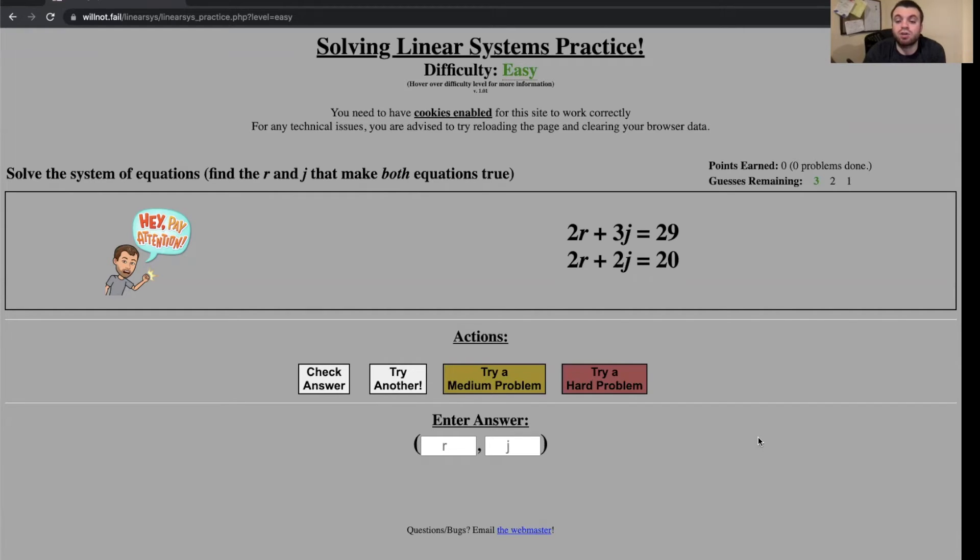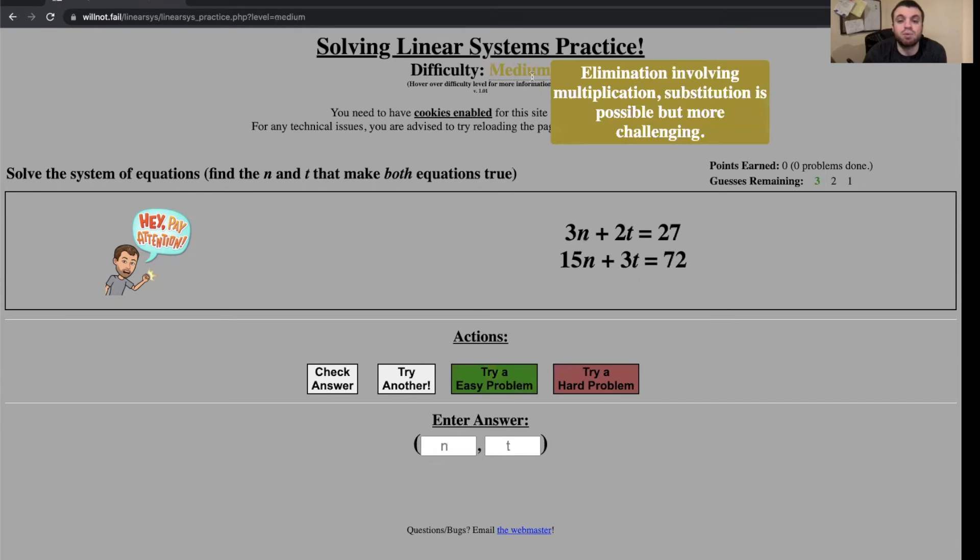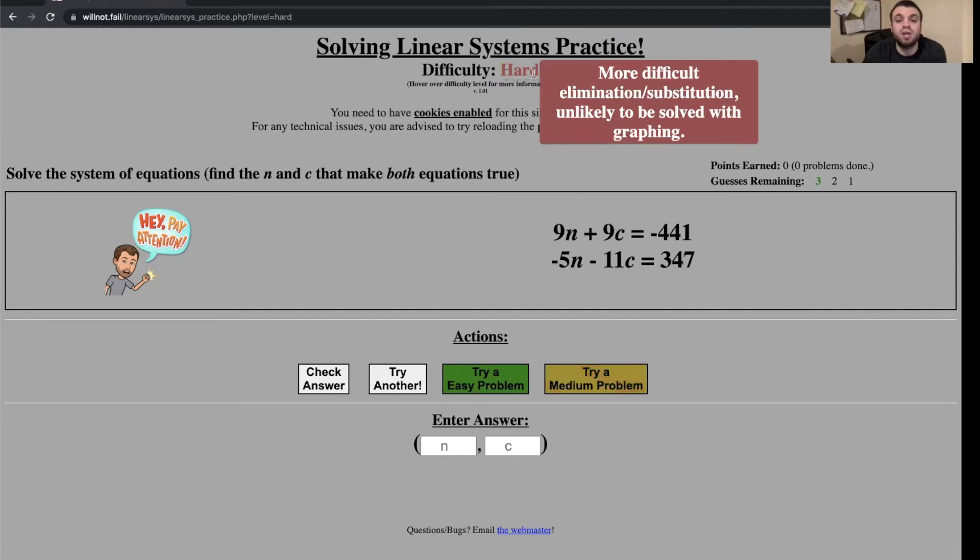You're going to need to solve a system of equations. The system can be easy, and you can hover over to see what each of them mean. We have medium problems, so substitution is possible but it's a little bit more challenging to execute. And hard—this is going to be very difficult to do substitution, or you're going to have to really do a few steps or think through it if you want to do elimination.